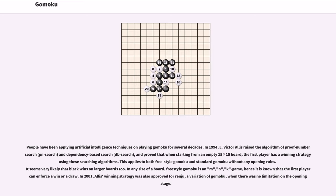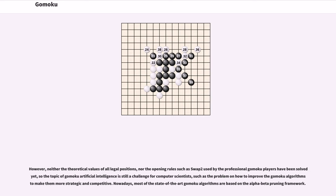In 2001, Alice's winning strategy was also approved for Renju, a variation of Gomoku, when there was no limitation on the opening stage. However, neither the theoretical values of all legal positions, nor the opening rules such as Swap 2 used by professional Gomoku players have been solved yet. So the topic of Gomoku artificial intelligence is still a challenge for computer scientists, such as the problem on how to improve the Gomoku algorithms to make them more strategic and competitive.